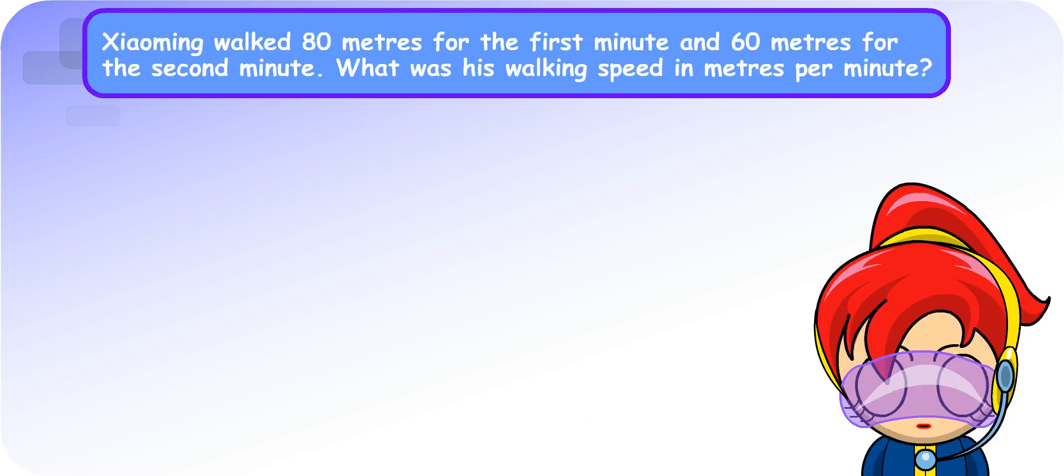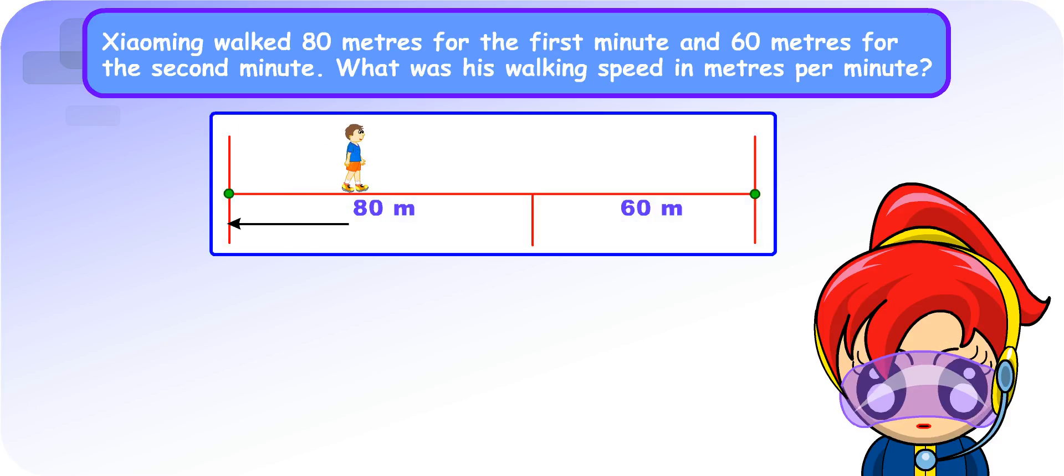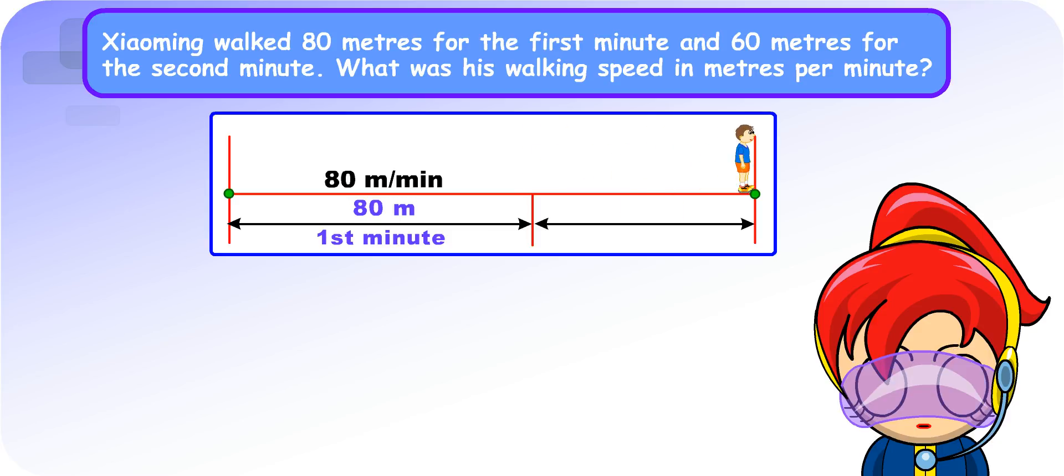Turbo Girl, we have learnt that speed is the distance travelled per unit time. Now, tell me what is Xiaoming's walking speed in meters per minute? Hmm, Xiaoming walked 80 meters for the first minute. So, I can say his walking speed is 80 meters per minute. But, he also walked 60 meters for the second minute. So, his walking speed is 60 meters per minute? Oh, I'm very confused. Which is his walking speed?